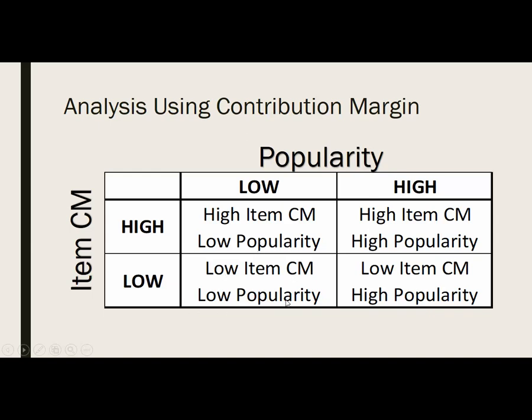Low item contribution margin and low popularity are referred to as 'dogs' — they're not making you money and they're not popular. The previous category (high CM, low popularity) is called a 'puzzle' because you want to sell more but don't know how. The only reason to keep dogs around is if you can reinvent them or if they're a loss leader — an item that brings people in but doesn't make money, hoping they'll purchase other items like alcohol or additional meals.